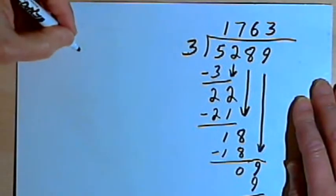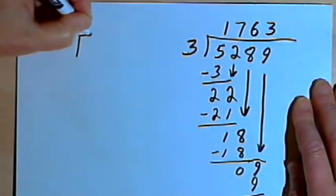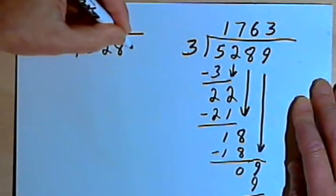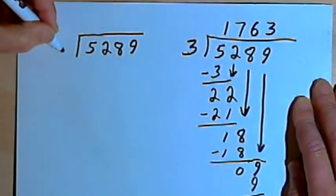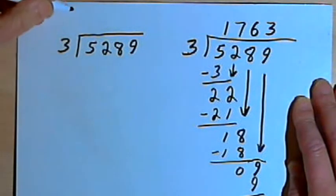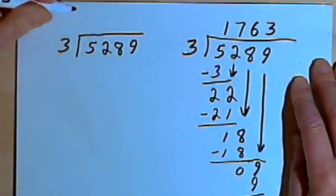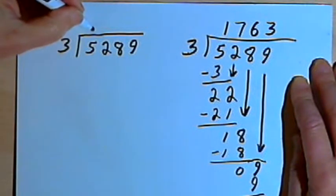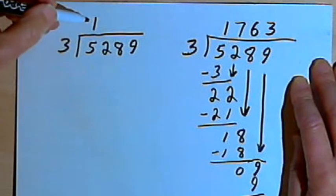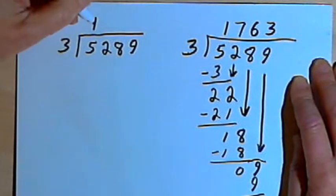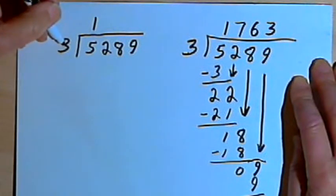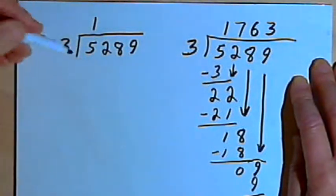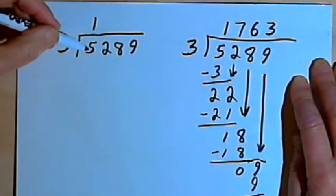Now let's do this by short division. So we're gonna set this up the same way. I'll put that 5,289 into a box. And I'll put a 3 to the left of it. And I'm gonna start the same way as before. 3 goes into 5 one time. Now at this point, I'm gonna start doing some things in my head. So I'm thinking 1 times 3 is 3. But instead of writing that, as I did in the long division method, I'm just gonna keep it in my head and subtract it from 5.